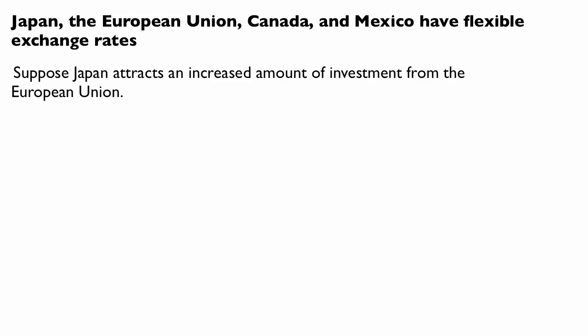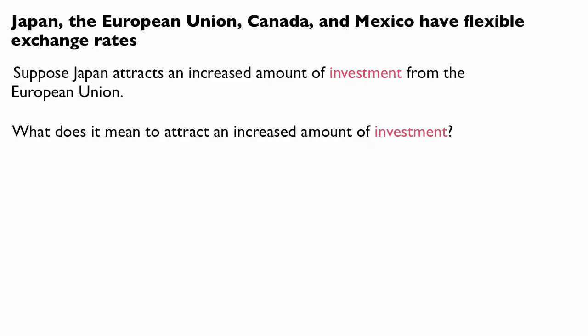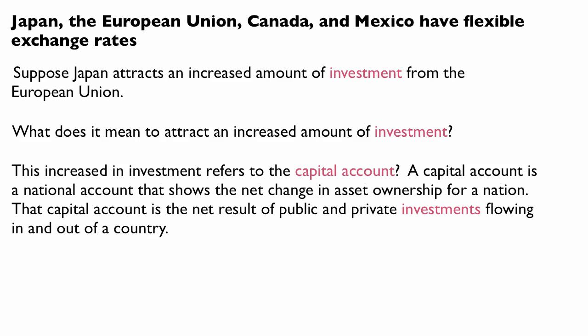Suppose Japan attracts an increased amount of investment from the European Union. This increase in investment refers to the capital account. A capital account is a national account that shows the net change in asset ownership for a nation — it is the net result of public and private investments flowing in and out of a country.